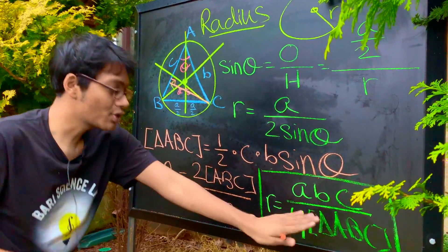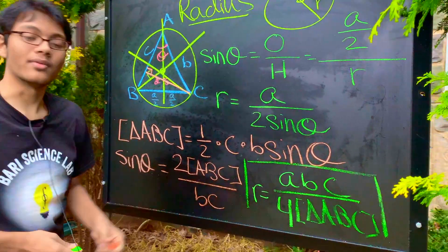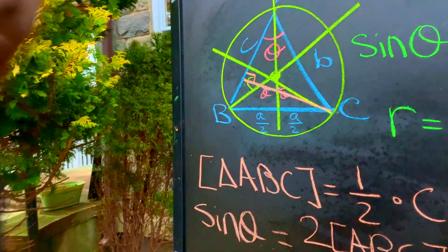The area of the triangle given in terms of the circum radius. Thanks for watching this lecture of math for month sponsored by Brilliant.org. And we'll see you next time.